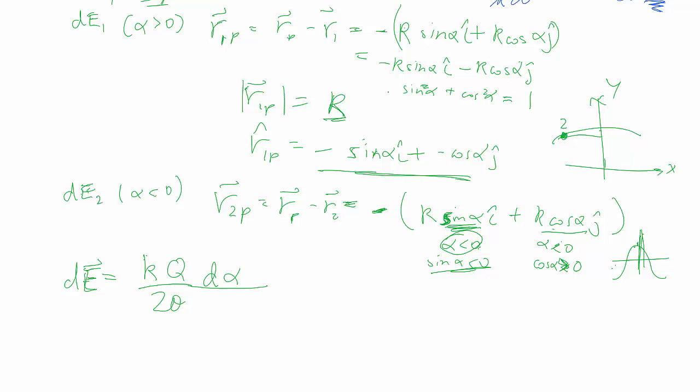As we mentioned, was q divided by 2θ d alpha. And then my R is big R, all squared, unit vector being minus sine alpha in the i plus minus cosine alpha in the j.